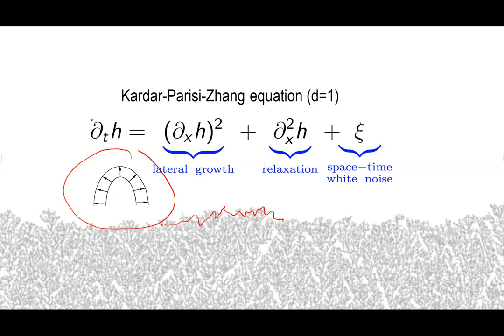Because the interface is supposed to look locally like a Brownian motion, ∂_x h looks locally like a white noise, so squaring it is an ill-defined object — it needs some sort of infinite renormalization. That's what Martin Hairer did: as long as you subtract a proper infinity, it's well-defined and there's a good well-posedness theory. It's also true that h can be written as the log of the multiplicative stochastic heat equation, which can be defined using classical Itô calculus.